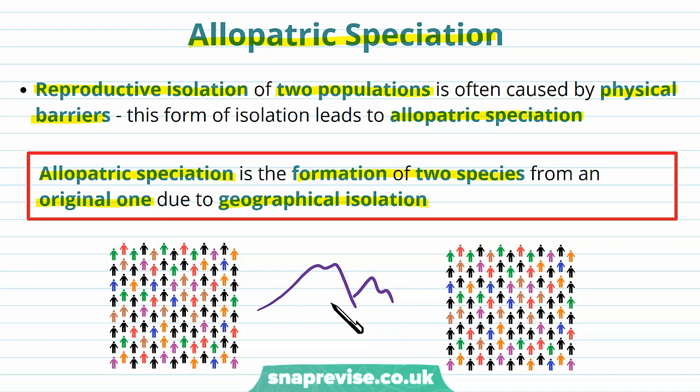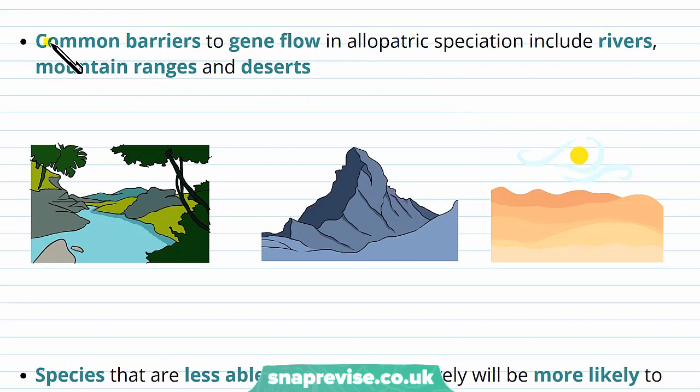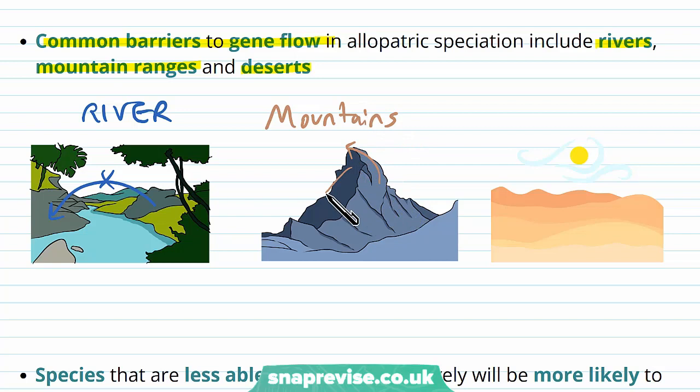Common barriers to gene flow include rivers, mountain ranges, and deserts. A river may stop certain insects from one side getting to the other, preventing any gene flow or reproduction. Mountain ranges can stop many animals from crossing — for example, mammals which would never get over the rise. Deserts can separate places very far apart, such as across Africa, where animals would never survive crossing the desert and so never meet the population on the other side.